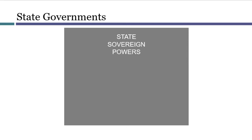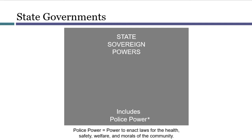Sovereign governments have what are sometimes called police powers. This term is not limited to our current understanding of the police as an organized body of law enforcement officers. As it's used in American constitutional discourse, the police power is the power to enact laws for the health, safety, welfare, and morals of the community. A law funding a police department would certainly be one use of the police power, but the power is broader than that. Using the police power, a state could pass a law making it illegal to sell heroin, imposing speed limits on highways, creating a university, or requiring restaurants to get licenses and be subject to health department inspections.